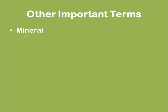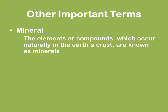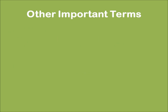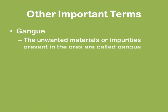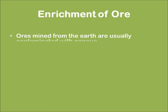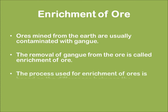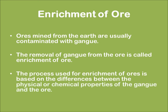A mineral is an element or compound which occurs naturally in the earth's crust. An ore is a mineral that contains a very high percentage of a particular metal from which the metal can be profitably extracted. Gang (gangue) is nothing but an impurity present in an ore. The removal of gangue from the ore is known as enrichment of ore, and the process used depends on the physical and chemical properties of the gangue — it is not the same for all ores.